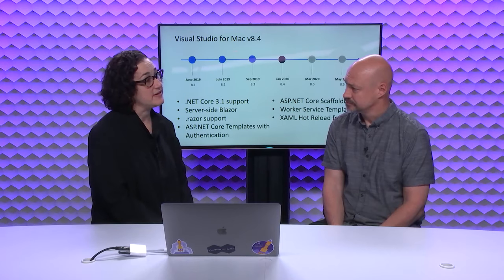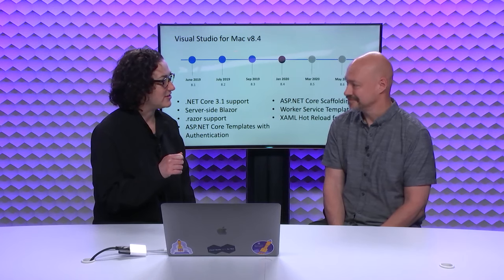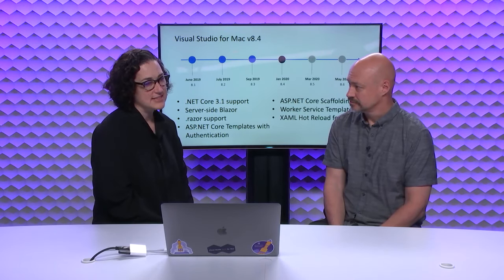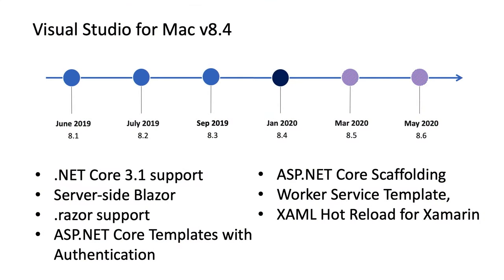We also continually focus on improving the inner loop — that edit, debug, build cycle is incredibly important. We often refer to it as F5, which is the common hotkey. That's really the critical inner loop that determines every iteration cycle you take as a developer: you edit the code, you build it, and then you want to be able to debug it and see it live. One of the things we've introduced in the latest releases is XAML Hot Reload for Xamarin — it's like magic watching it work. You can make a change and see it very quickly.